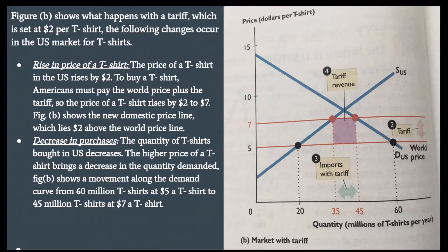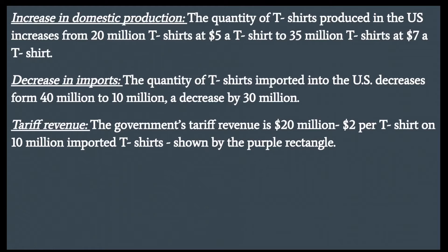Decrease in purchases: the quantity of T-shirts bought in the U.S. decreases. The higher price brings a decrease in quantity demanded, from 60 million T-shirts at $5 to 45 million T-shirts at $7. Domestic production increases from 20 million T-shirts at $5 to 35 million T-shirts at $7. Decrease in imports: the quantity of T-shirts imported decreases from 40 million to 10 million — a decrease of 30 million. Tariff revenue: the government's tariff revenue is $20 million, that is $2 per T-shirt on 10 million imported T-shirts, shown by the purple rectangle.